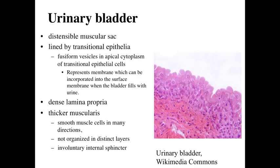The urinary bladder is going to be a distensible muscular sac, meaning that we can essentially inflate this bladder as it fills with urine. We're going to be lined by a transitional epithelium — a stratified epithelium — with nucleated, dome-shaped cells along the surface, as opposed to the flattened cells we would see in a minimally keratinized stratified squamous epithelia in areas like the digestive tract or the vagina. If we take a look at these transitional epithelial cells with electron microscopy, we're going to see fusiform vesicles — vesicles which are essentially membrane-bound structures that can fuse with our apical plasma membrane and increase the amount of surface area available, allowing these cells to stretch a little bit further.